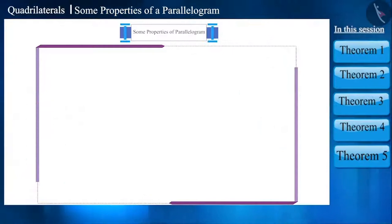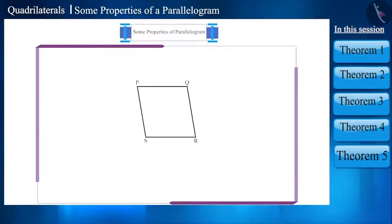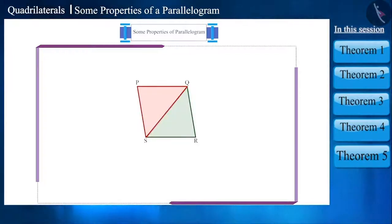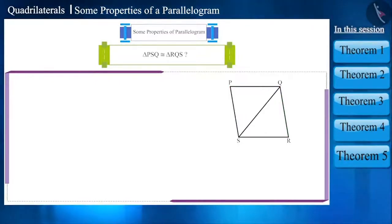Let's construct a parallelogram PQRS. If we combine these two vertices in this way to form diagonal QS, then we will get these two triangles. Can we say something about these triangles? Will these two triangles be congruent? Let's check it out.